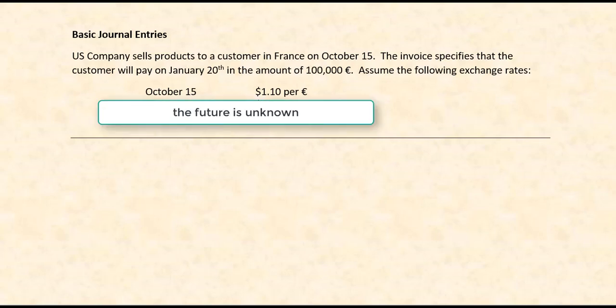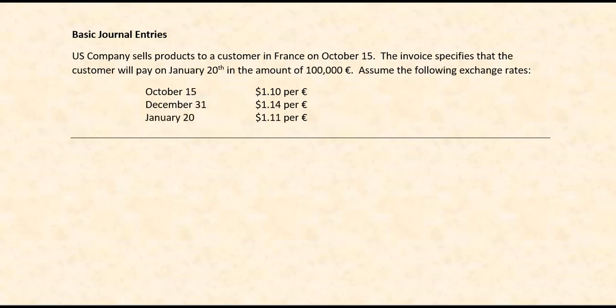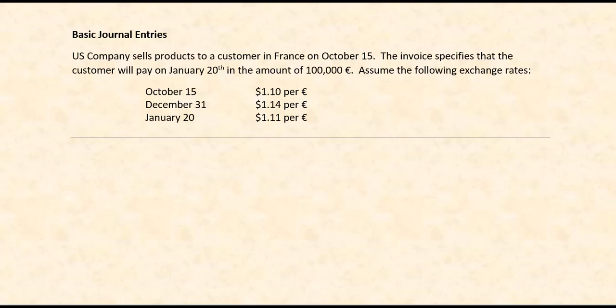On October 15, the day we deliver the product to France, the exchange rate is each euro costs $1.10. On October 15 we would not know any of those future exchange rates, but by the time we get to December 31, we would know that the exchange rate is now $1.14 per euro. So in that case, the euro has appreciated versus the U.S. dollar — it's gotten more expensive relative to the U.S. dollar. However, 20 days later on January 20, the euro is at $1.11. So between December 31 and January 20, the euro depreciated — it got cheaper in terms of U.S. money.